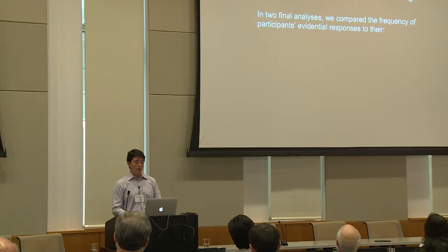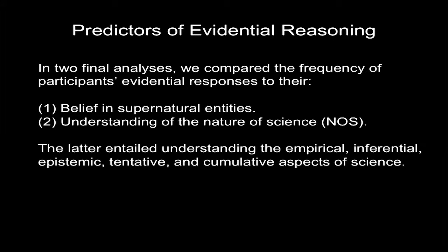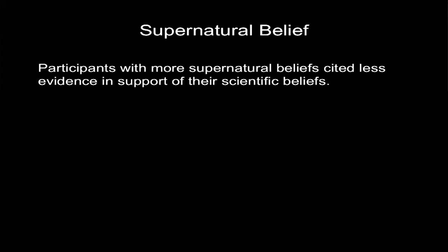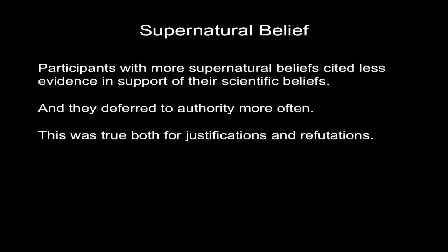The last set of analyses looked at predictors of evidential reasoning — providing evidential justifications and refutations. We looked at participants' overall belief in supernatural entities — the total number of entities out of 12 they said they believed in — and also a measure of understanding of the nature of science: participants' understanding of science as an empirical, inferential, epistemic, tentative, and cumulative enterprise. We found that participants with more supernatural beliefs cited less evidence in support of their scientific beliefs and deferred to authority more often when justifying scientific beliefs. This was true both for justifications and refutations.